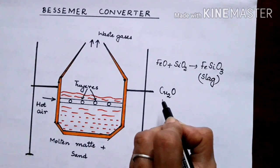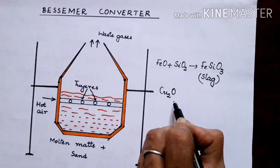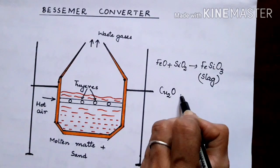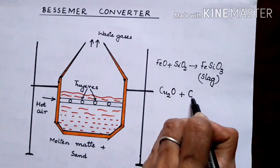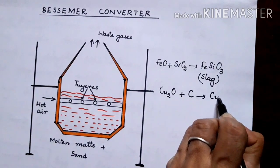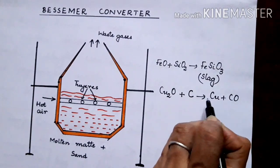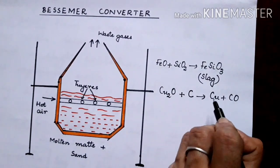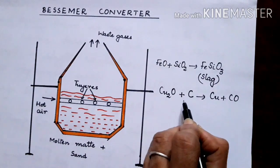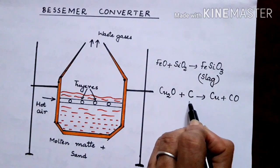So we have converted Cu2S to Cu2O by roasting. This Cu2O is mixed with carbon, that is coke, to form Cu plus carbon monoxide. So you find that most of the copper oxide will be converted to copper by treatment with the reducing agent coke.